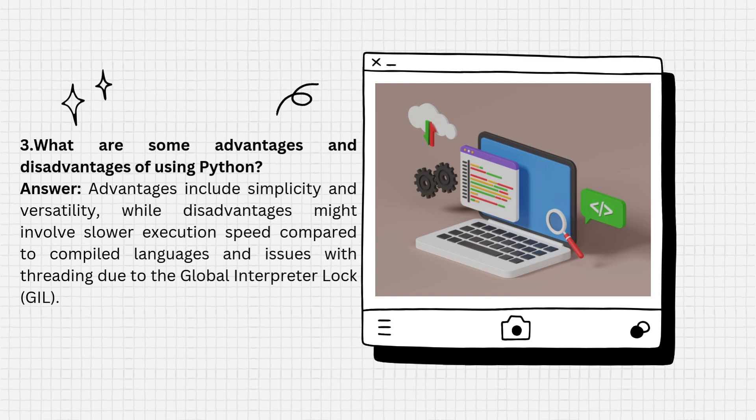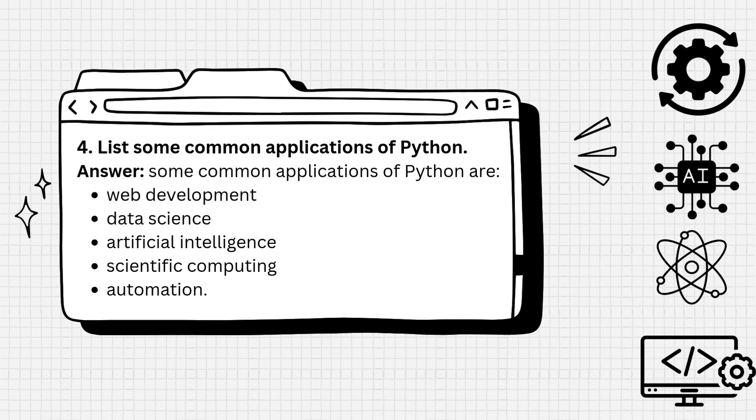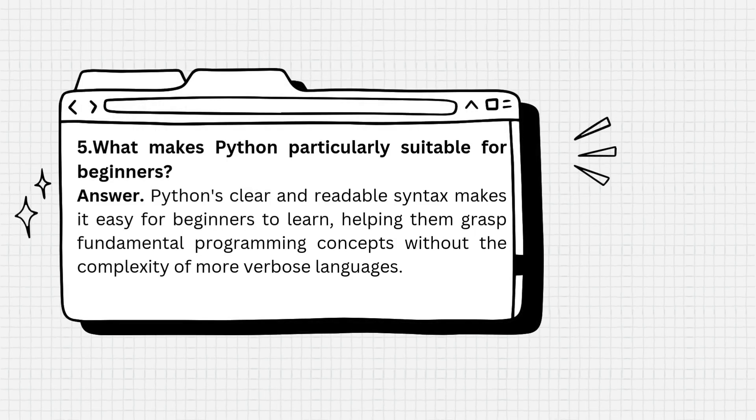the Global Interpreter Lock (GIL). Question 4: List some common applications of Python. Answer: Common applications of Python include web development, data science, artificial intelligence, scientific computing, and automation. Question 5: What makes Python particularly